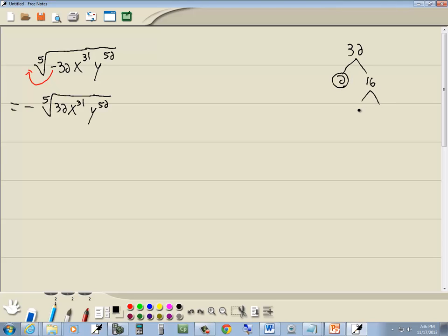2 is prime, so we circle it, and we go to 16. It's divisible by 2, 2 times 8. 2 is prime, so we circle it.